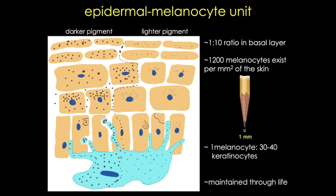Each melanocyte contacts 30 to 40 keratinocytes because of those filipodia. This ratio—the epidermal melanocyte unit—is maintained throughout the life of the melanocyte.